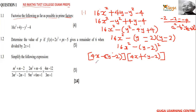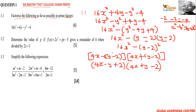So it becomes (4x minus y plus 2) and then (4x plus y minus 2). And that's it — we have fully factorized 1.1. Let's go to the second question.